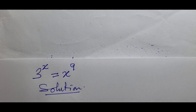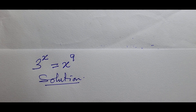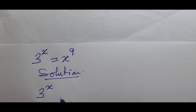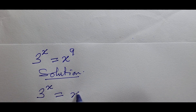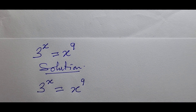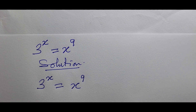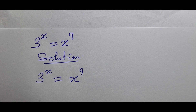So let's put the question first: we have 3^x = x^9. Multiplying the two powers gives us 9x, and finding the reciprocal of that gives us 1/(9x). We then raise both sides to the power of 1/(9x).